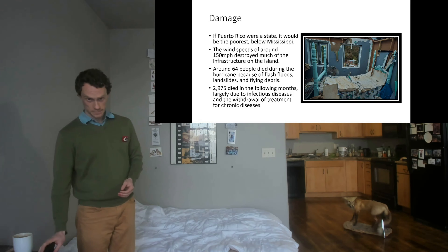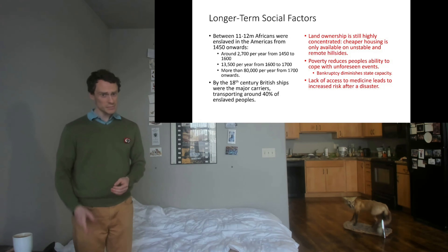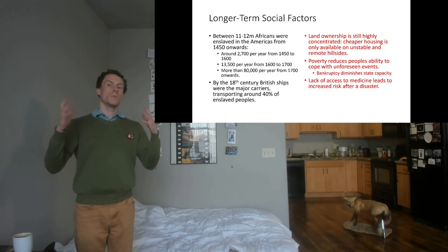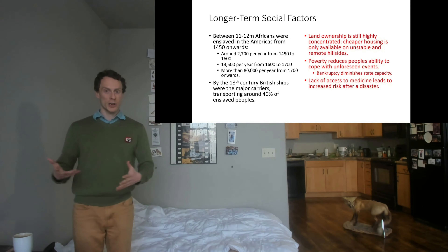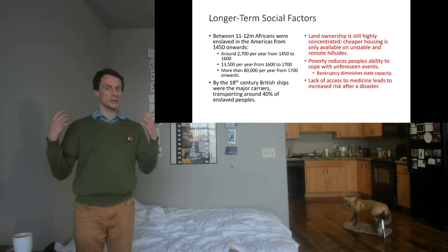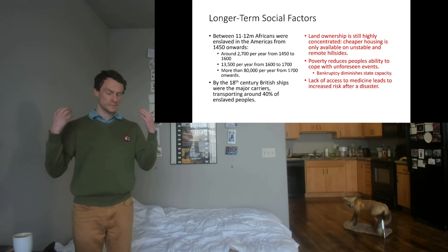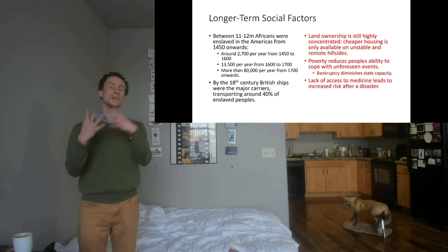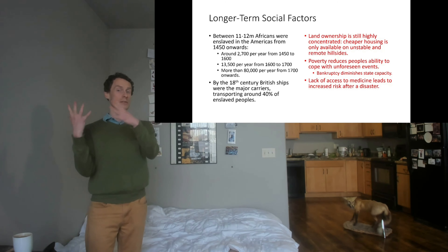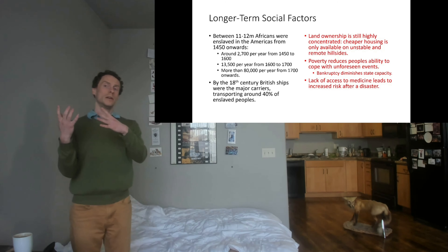In the months following the hurricane, thousands more people died because of infectious diseases and because it wasn't possible to get medical supplies to parts of the island — infrastructure and roads had been destroyed, making it difficult to restore power and clean water. The scale of the disaster: 80 percent of agriculture gone, the entire island without power, and thousands of people losing their lives.